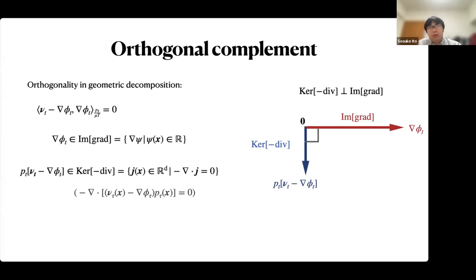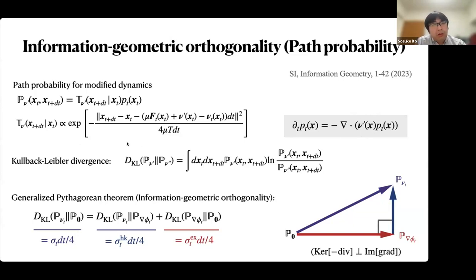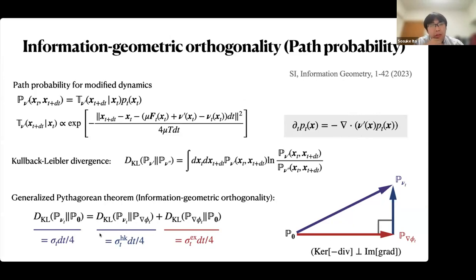By using this orthogonality, we can also obtain the orthogonal decomposition for the Kullback-Leibler divergence — that is, orthogonality in information geometry. We consider the path probability distribution for a modified dynamics, where the modified dynamics is given by a velocity field v-prime. If we consider the Kullback-Leibler divergence for two path probabilities, this orthogonality provides a generalization of the Pythagorean theorem in information geometry, and this equation gives the same decomposition of the entropy production rate.